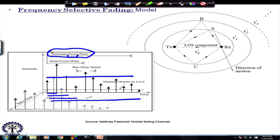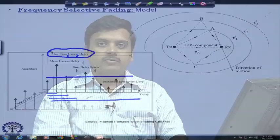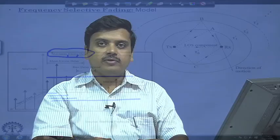We stop our discussion at this point. In the next lecture we will go into the details of this model and how it helps us characterize the received signal, leading to the understanding of frequency selective fading. That will bring us to the end of understanding small scale propagation effects necessary for this course. Thank you.